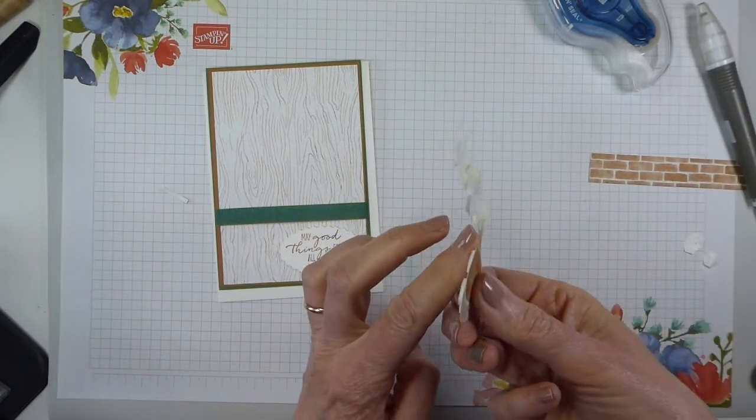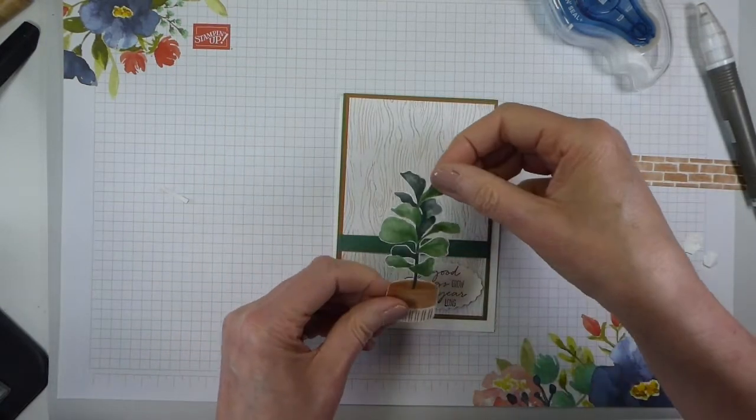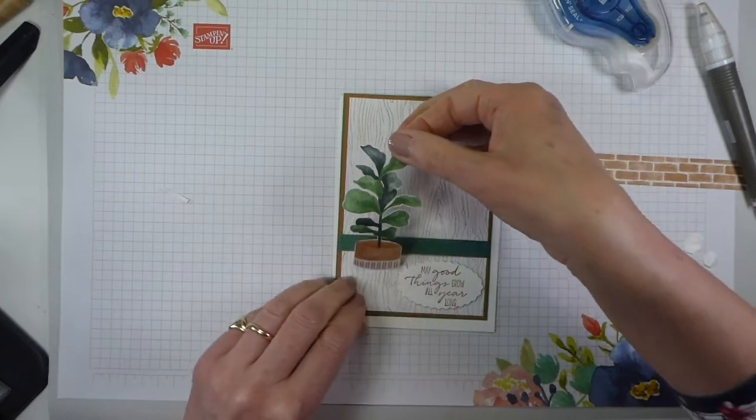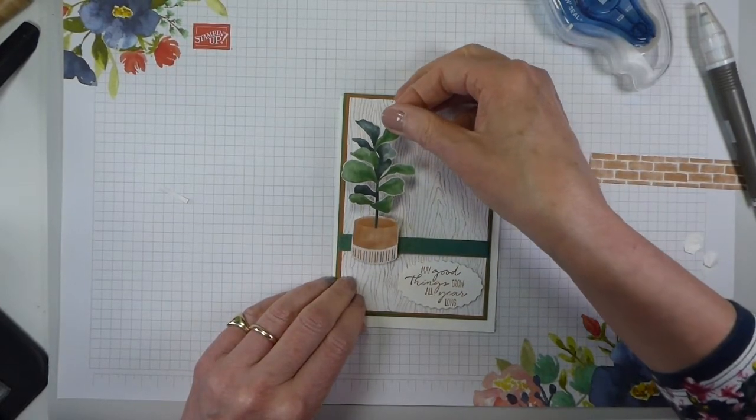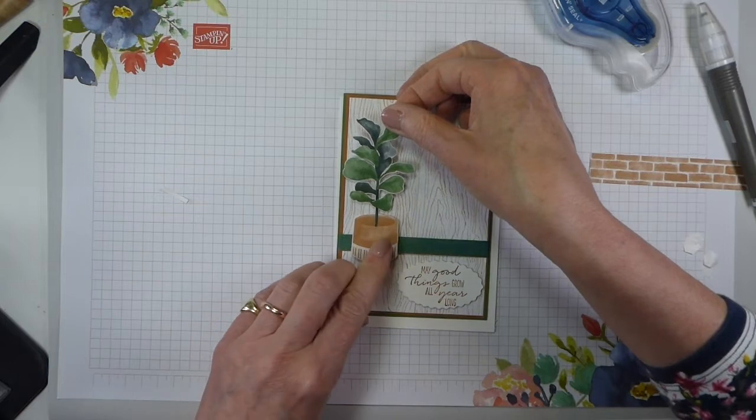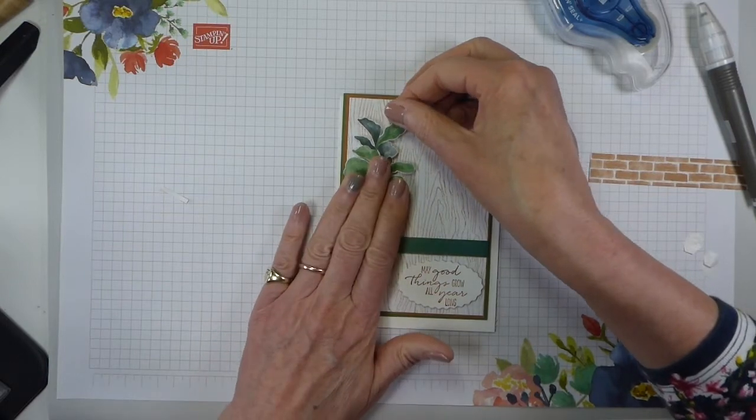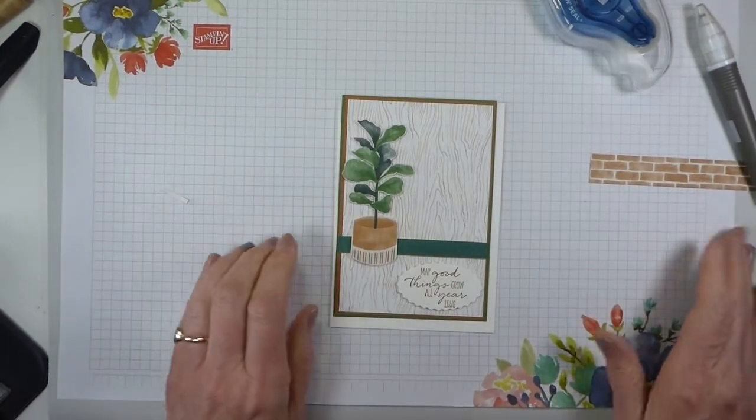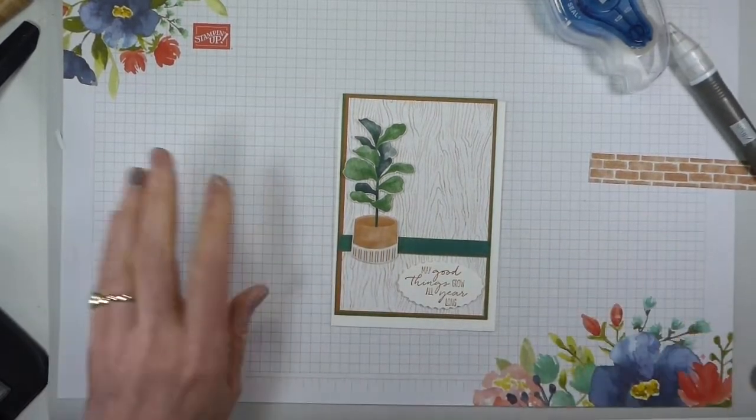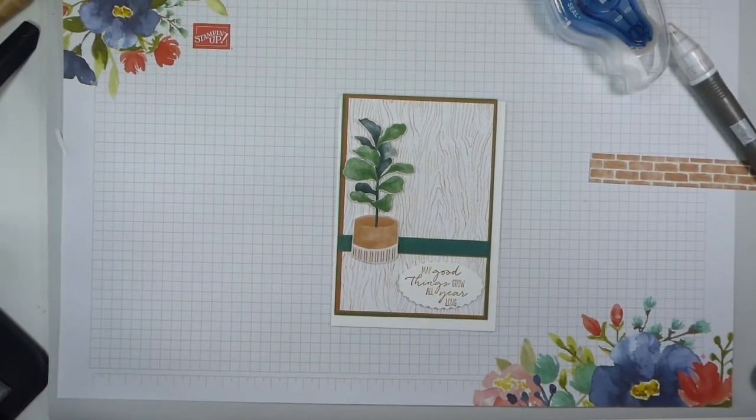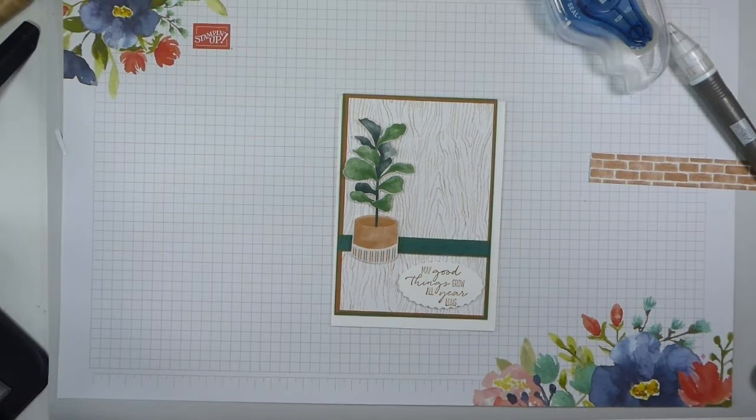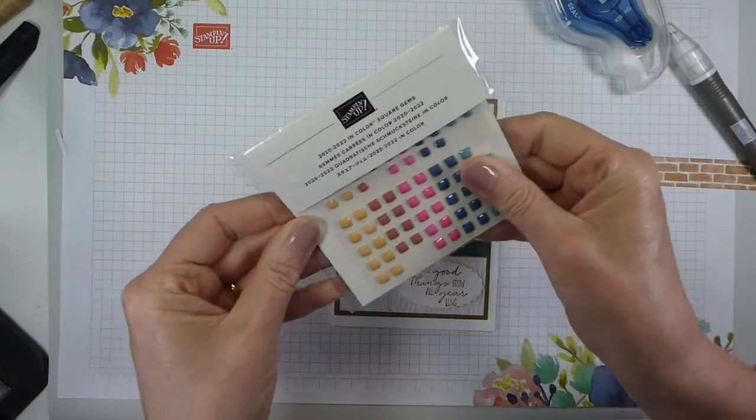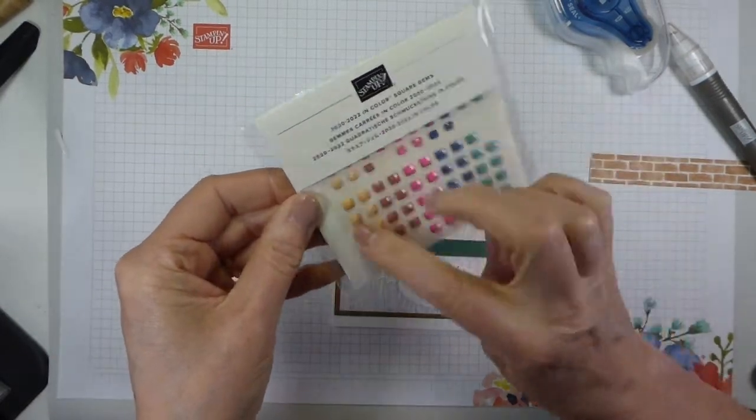She says, does make it easier when you don't then drop the backings back onto the dimensionals. That is how not to take the backings off dimensionals. Okay, I'm just going to pop that there.